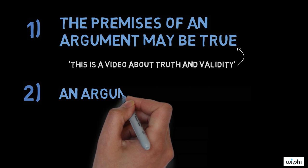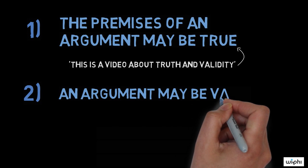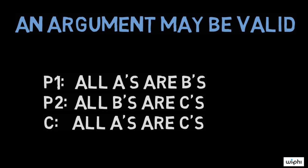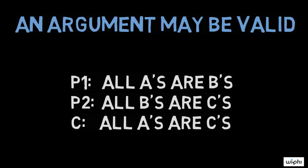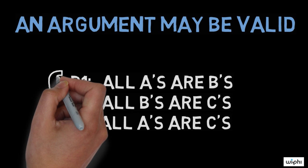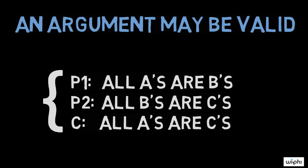Second, an argument may be valid. An argument is valid when its conclusion follows logically from its premises. In other words, an argument is valid just in case the truth of its premises guarantees the truth of its conclusion.